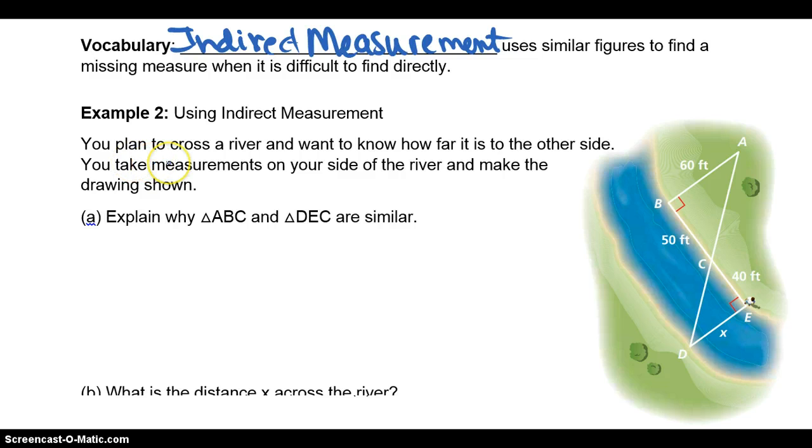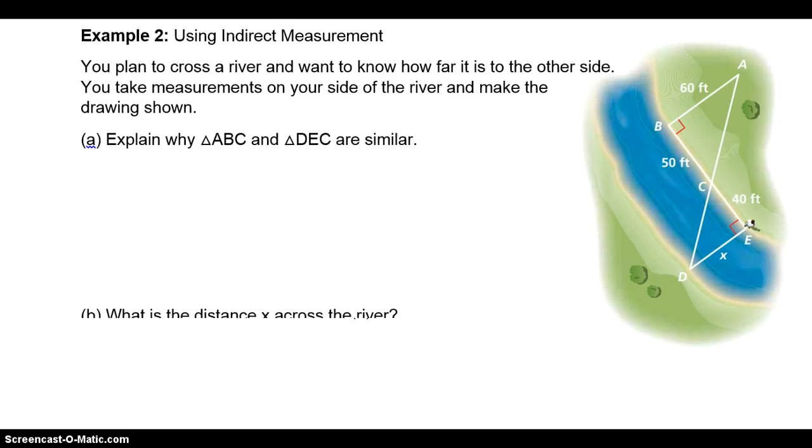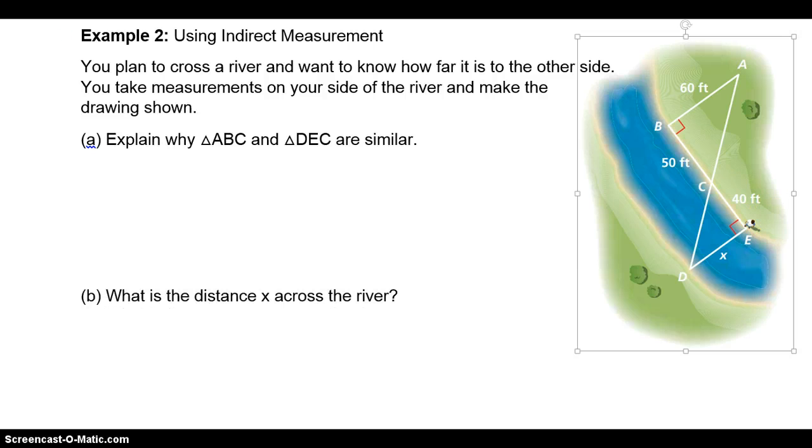Let's look at example two. You plan to cross a river and want to know how far it is to the other side. You take measurements on your side of the river and make the drawing shown. Here you are, and you're trying to find out what is the measure, how far it is to the other side, X. How could you do that?